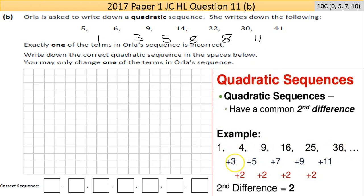So the first difference is 3, 5, 7, 9, 11. So the difference between those two figures: 4 take away 1 is 3, 9 take away 4 is 5, 16 take away 9 is 7. Now that's the first difference.